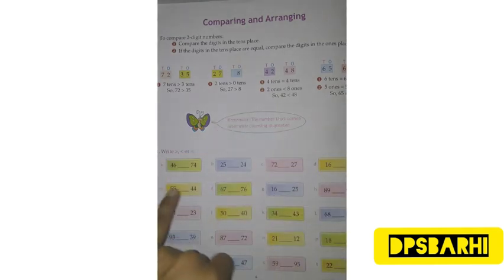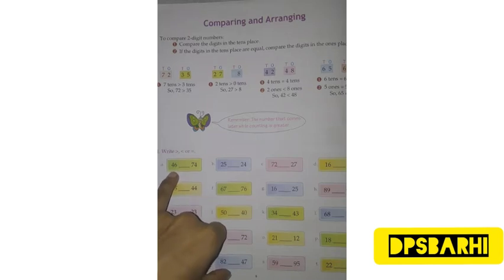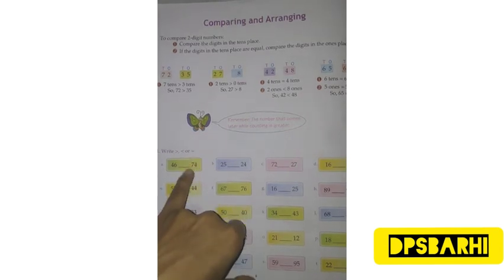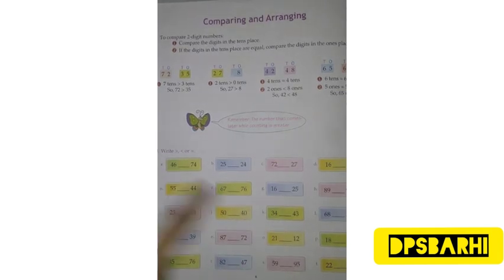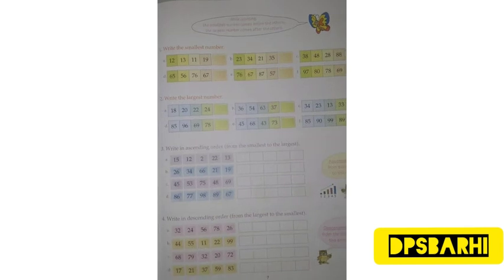In the same manner, you have to write this one. Here in the first example, you have to tell us that the tens place is 4 and the tens place is 7. So it is obvious that 7 tens is greater than 4 tens. You have to write the smallest number — this is the smallest number here.